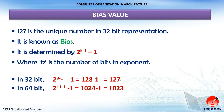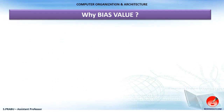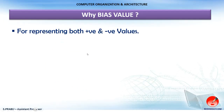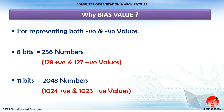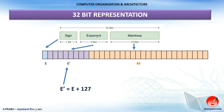The bias value is used to simply represent both positive and negative exponent values. For 8-bit exponent storage, 2⁸ = 256 possible values, split between 128 positive values and 127 negative values including 0. For 64-bit, 2¹¹ = 2048 possible values, giving 1024 positive values and 1023 negative values including 0. We transform the given exponent E into E′ by adding 127, enabling representation of both positive and negative exponents.